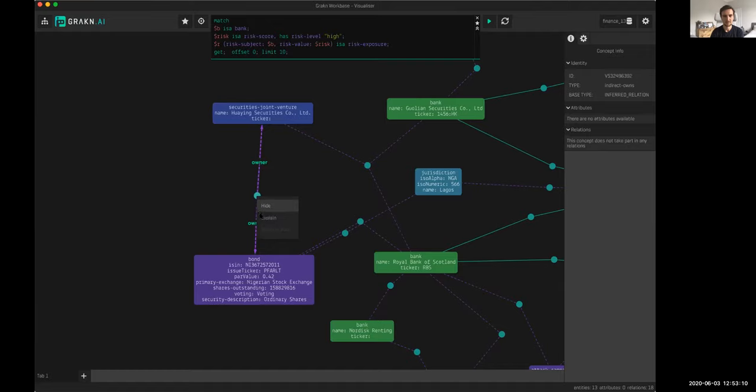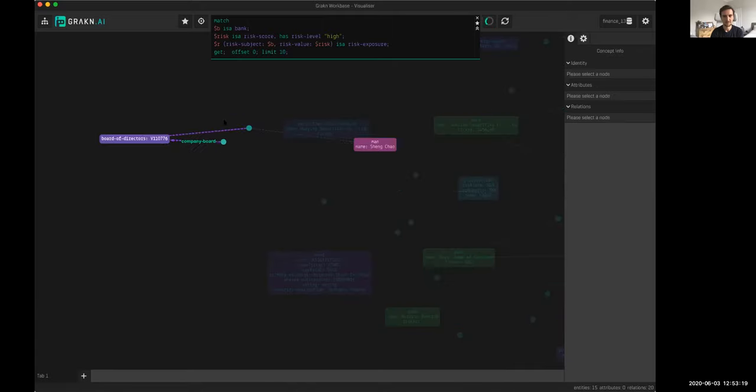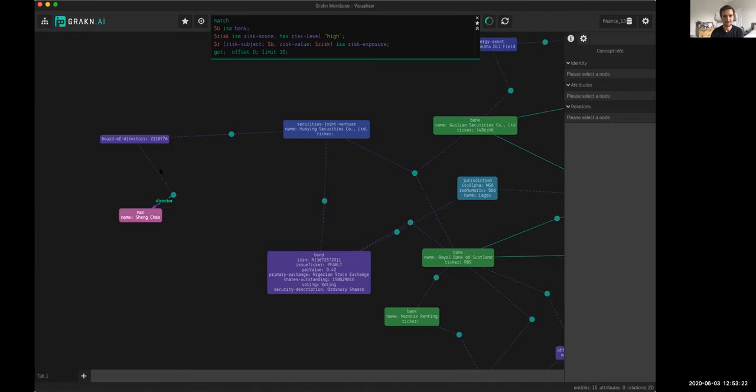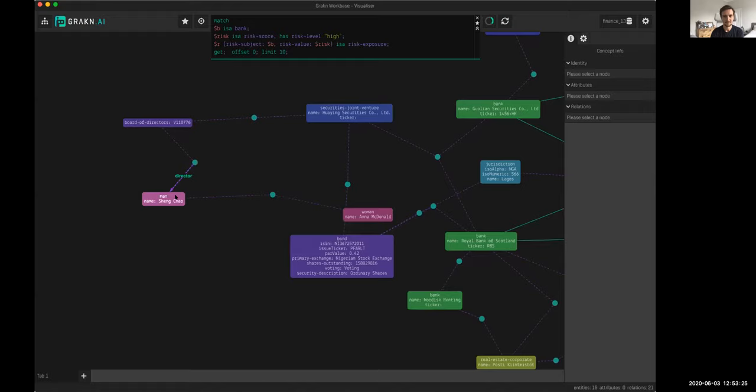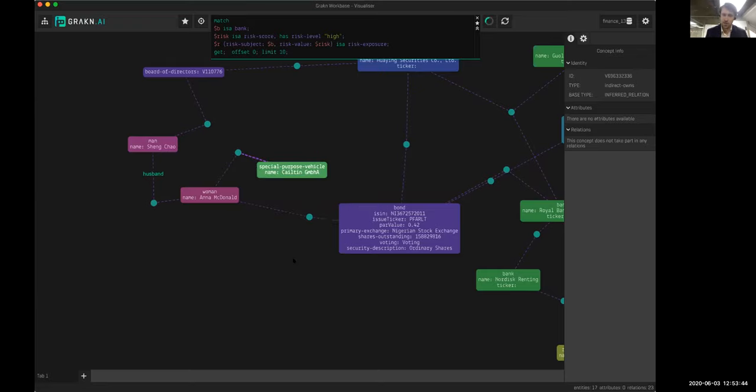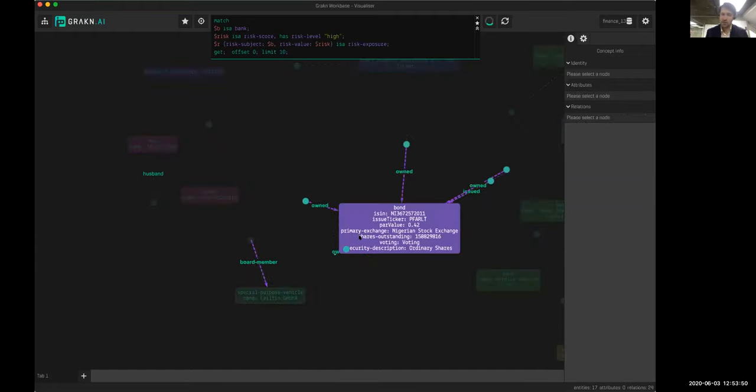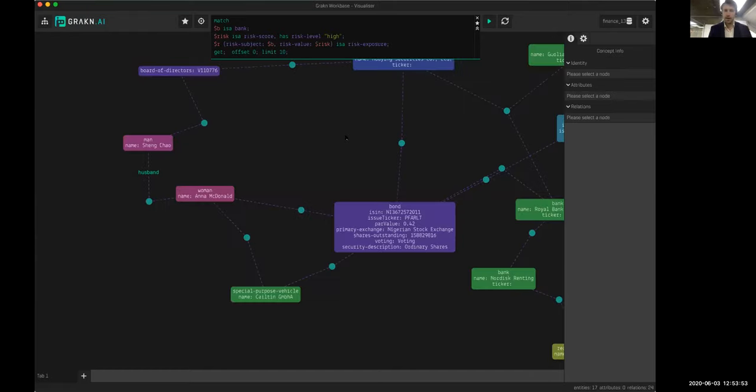We see that there's a connection between this bond and Huawei securities. There's this joint venture between these two banks that seems to have this exposure to that bond. But this is where it gets even more interesting because that exposure isn't fairly direct either. There's a board of directors sitting on following securities. One member on that board is a man named Sheng Chow, and Sheng Chow is married to a woman named Anna McDonald.